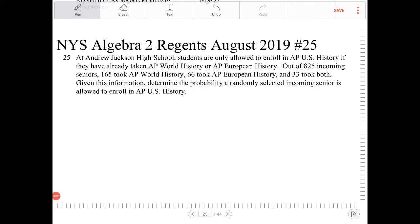At Andrew Jackson High School, students are only allowed to enroll in AP U.S. History if they have already taken AP World History or AP European History. Out of 825 incoming seniors, 165 took AP World History. So World History is 165.